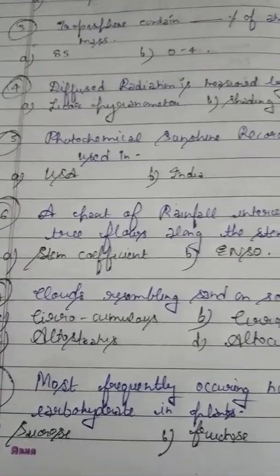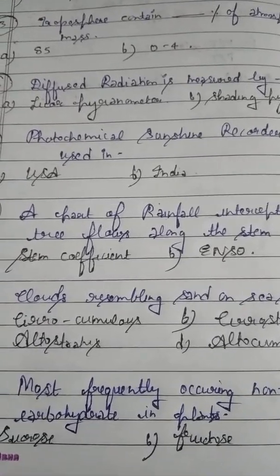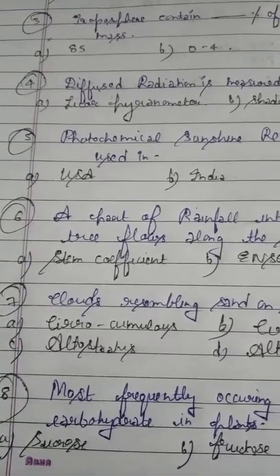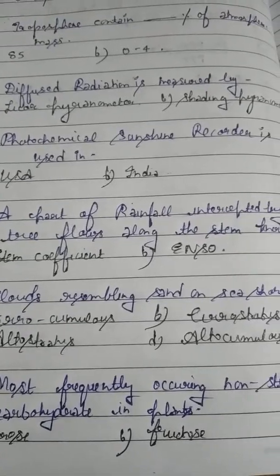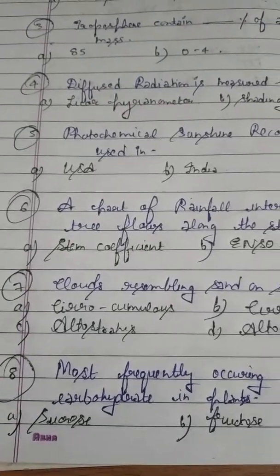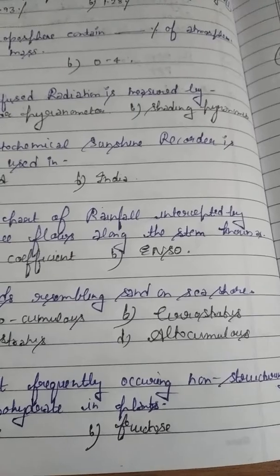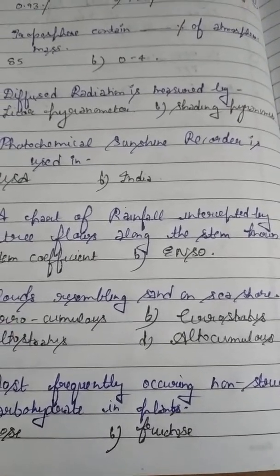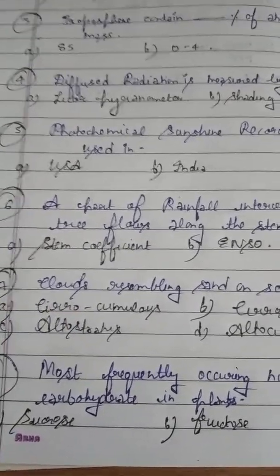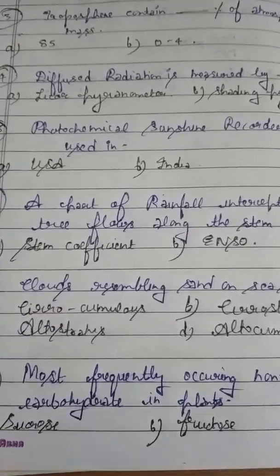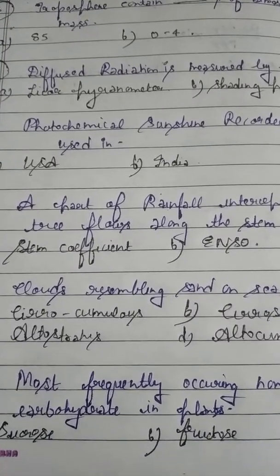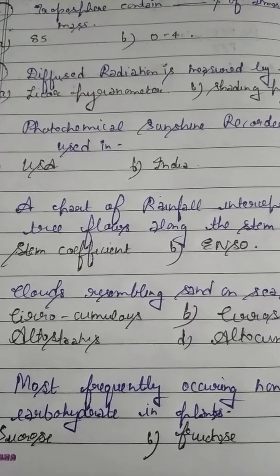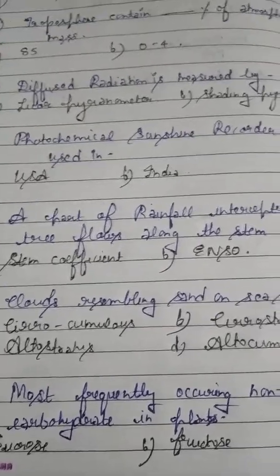Question number 4: Diffuse radiation is measured by? Option A: liquor pyranometer. Option B: shading ring pyranometer. Please remember — diffuse radiation contains 65% of the total radiation. Photosynthetically active radiation is 42%. Diffuse radiation is measured by the shading ring pyranometer. Please students, remember it.